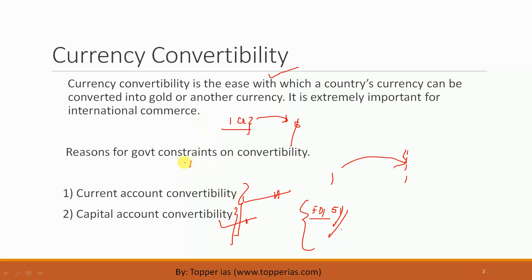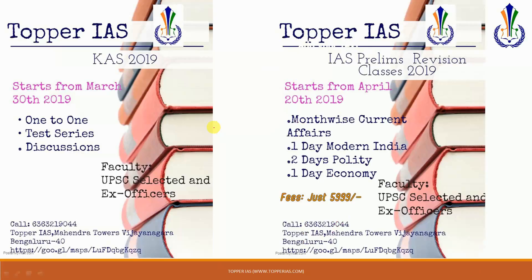Another thing you should know is the reason why the government is maintaining these constraints. The government maintains these constraints because sometimes it might not have adequate reserves to deal with such convertibility. A sudden large amount of conversion of rupee into dollar might impact the economy and lead to destabilizing of the rupee. So, to ensure that the home currency is stabilized, the government keeps these constraints. Thank you all for watching the video.